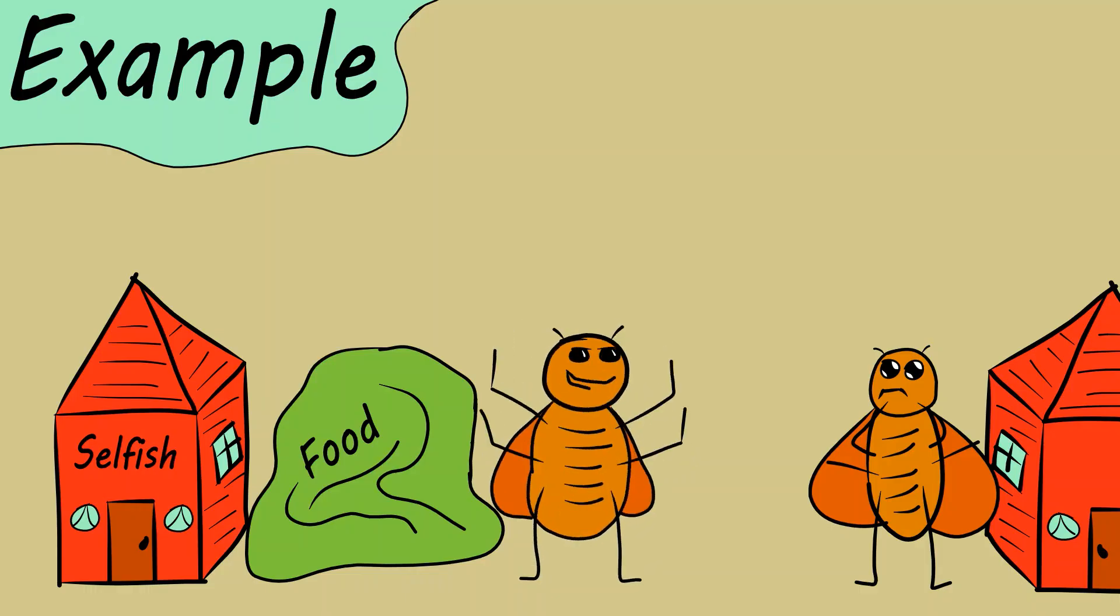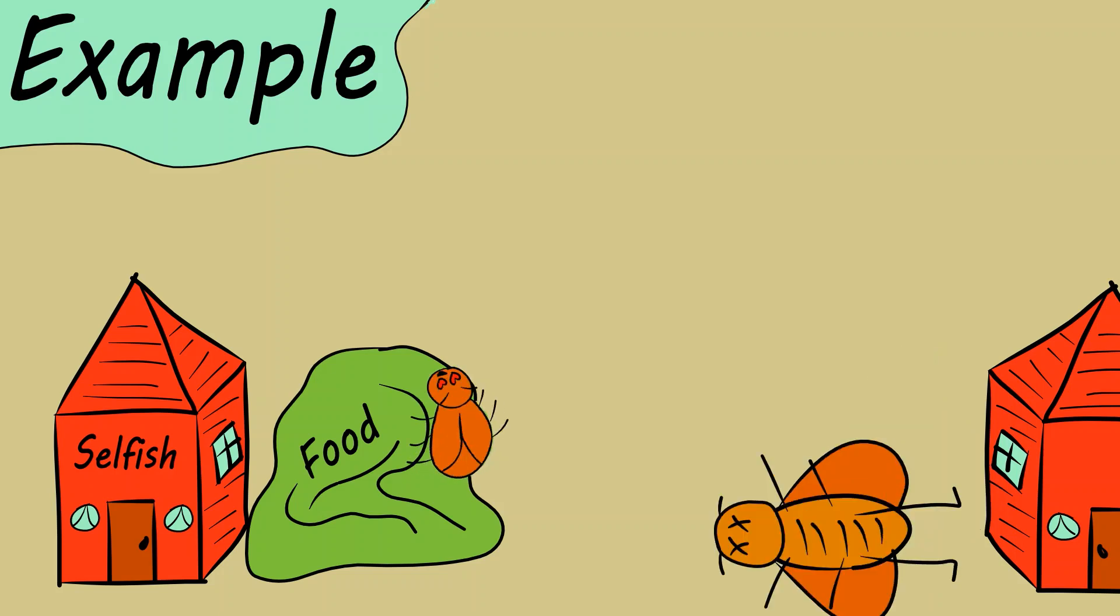An example of a selfish act is a beetle hoarding all the food for itself and leaving none for its beetle neighbor. Starving beetle dies and selfish beetle lives on to reproduce in exchange survive forever.